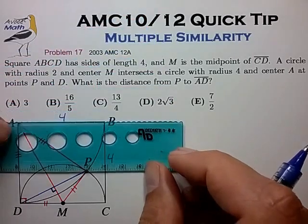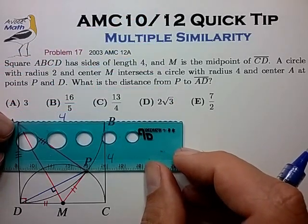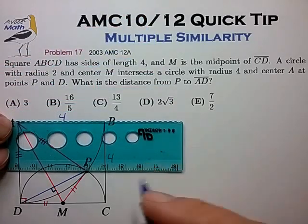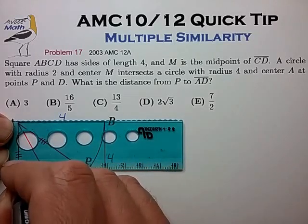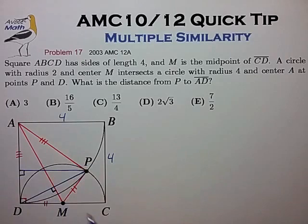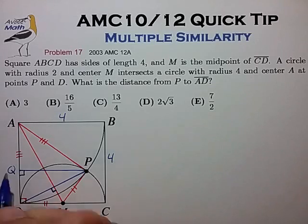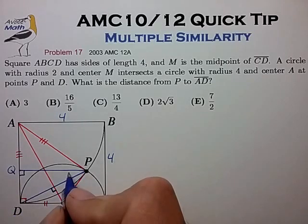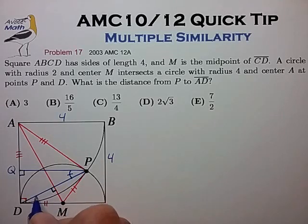And while we're here, why don't we also draw in the line segment that we seek from P perpendicular to line segment AD. Let's call that point Q. And we know that QP is parallel to DC. So we have two equal angles here. And it looks like we now have quite a few similar triangles to work with.